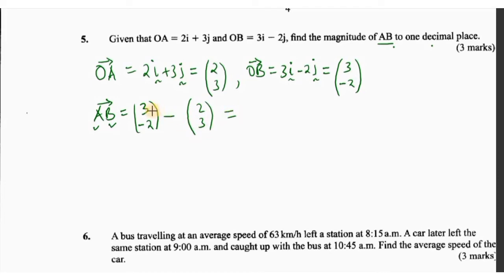And this should be 3 minus 2, that is 1, and negative 2 minus 3, that is negative 5. So that is vector AB.